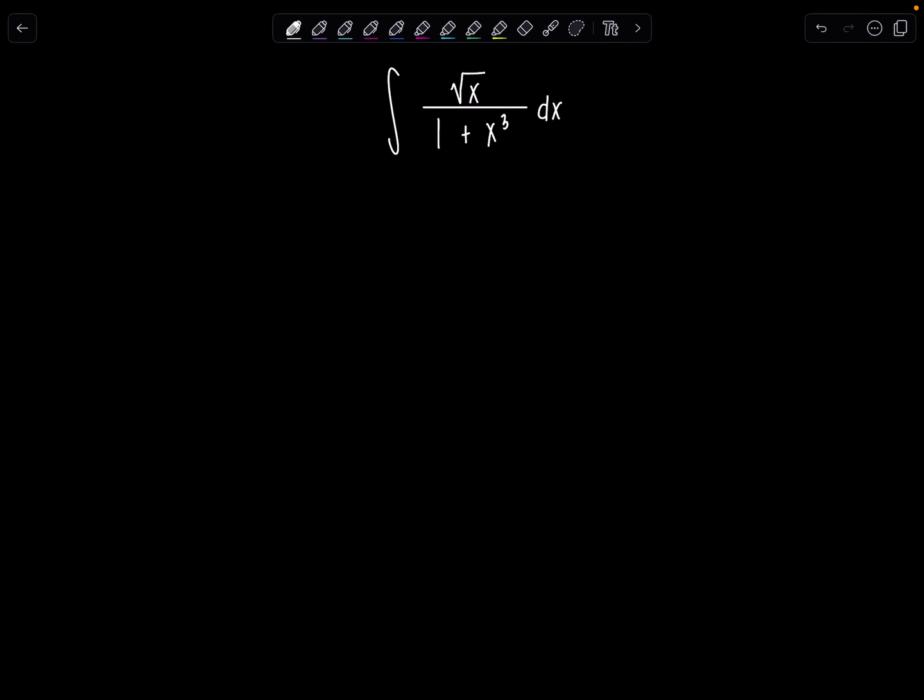Welcome to Math with Professor V. Here's your latest integral of the day. We have the antiderivative of square root of x over 1 plus x cubed dx. If you want a hint for this one, all it requires is u substitution. Depending on what you choose for u, it may take one or two rounds. So pause the video if you want to try it on your own.